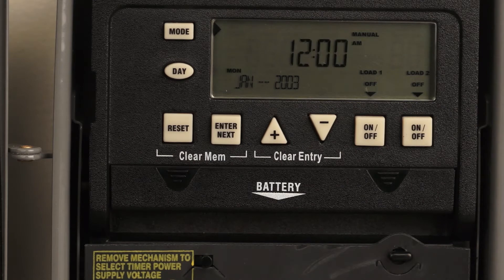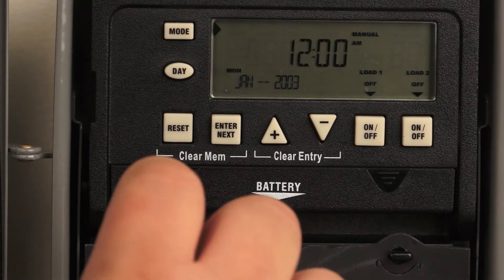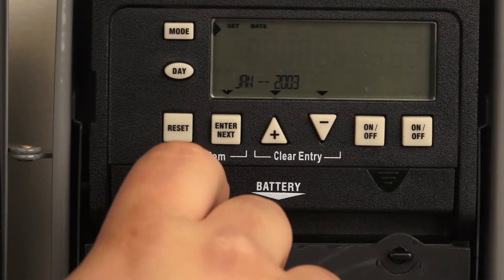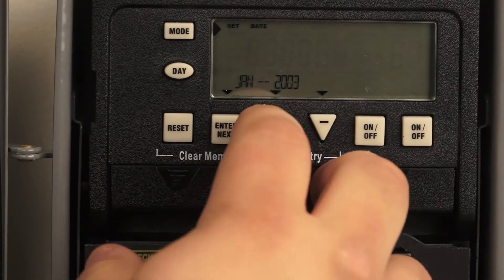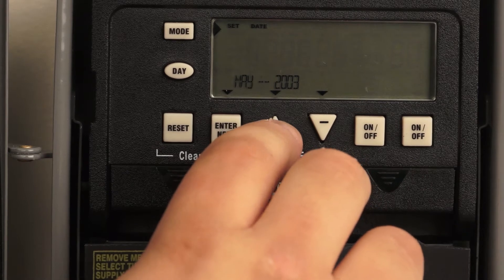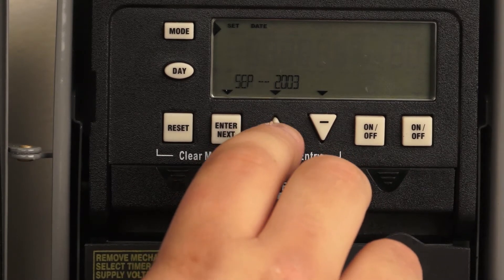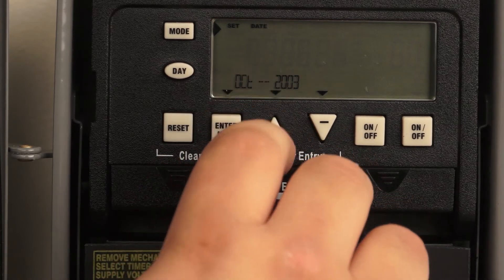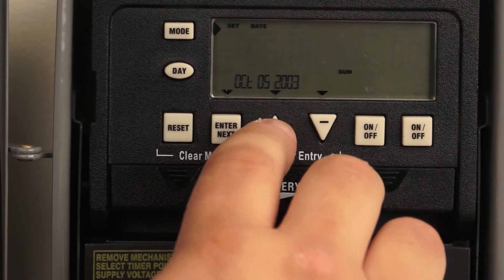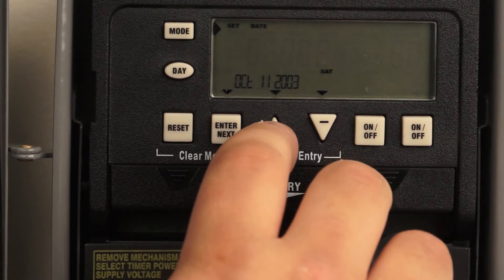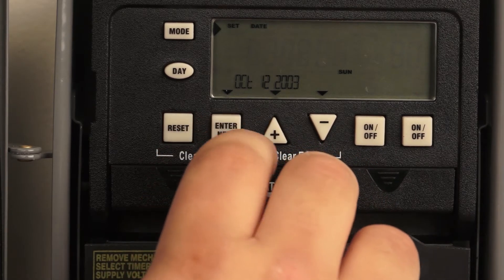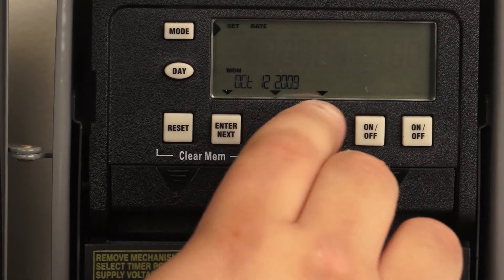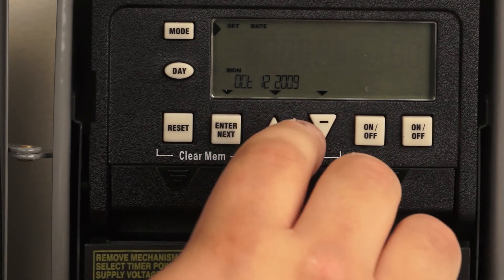So we're going to start by setting the actual date and you do that by hitting the mode button once. It will flash your current month and you put it to your current month. And once you are there, you hit enter, you set your date, do your current date, hit enter and then set your current year. You do all of this by hitting the plus or minus button to change anything.